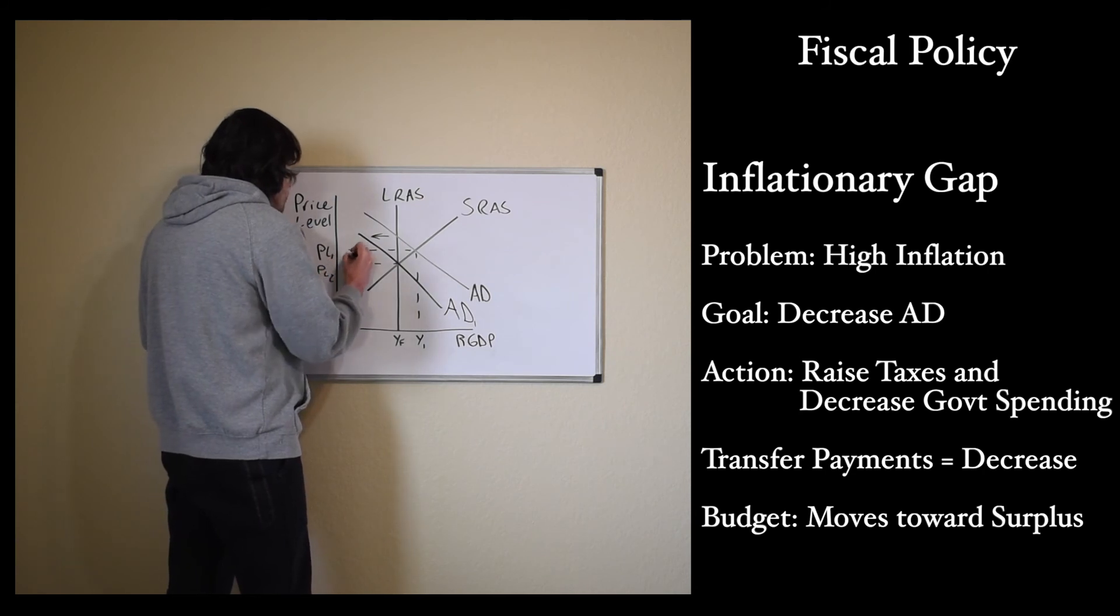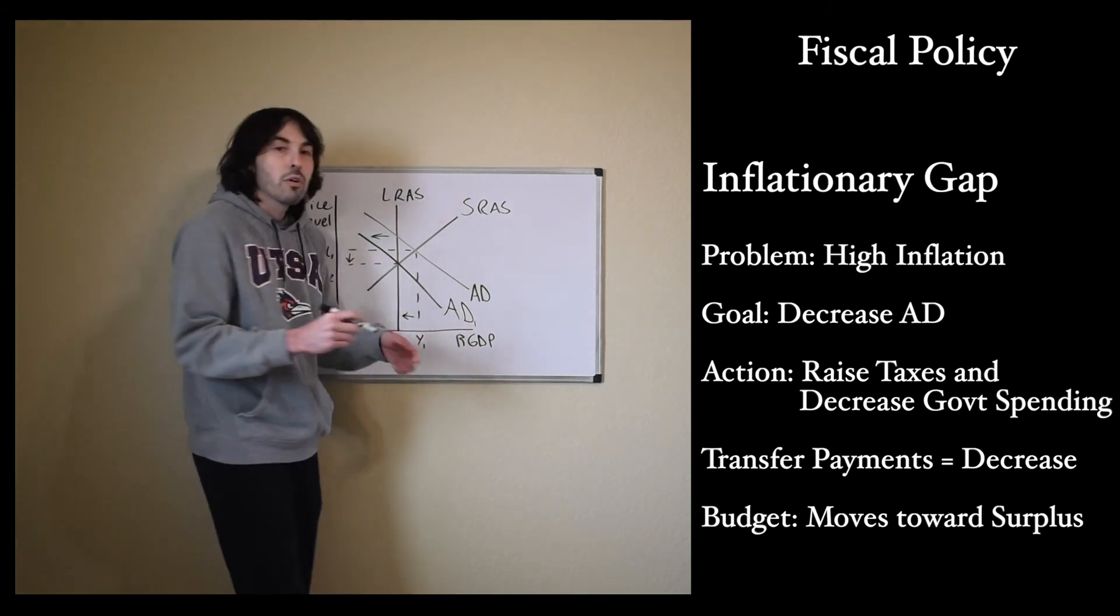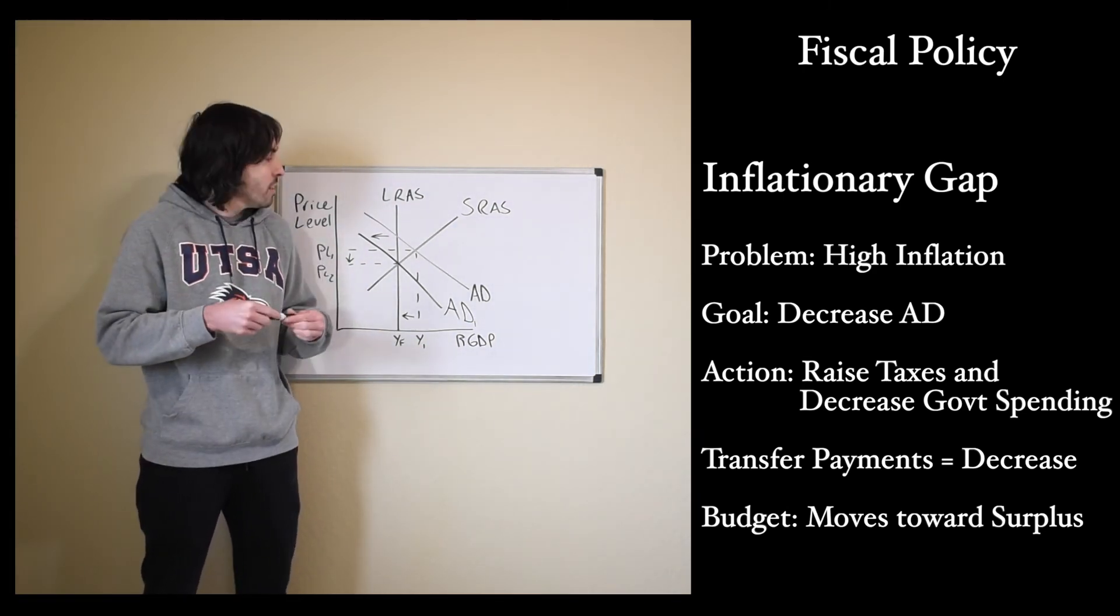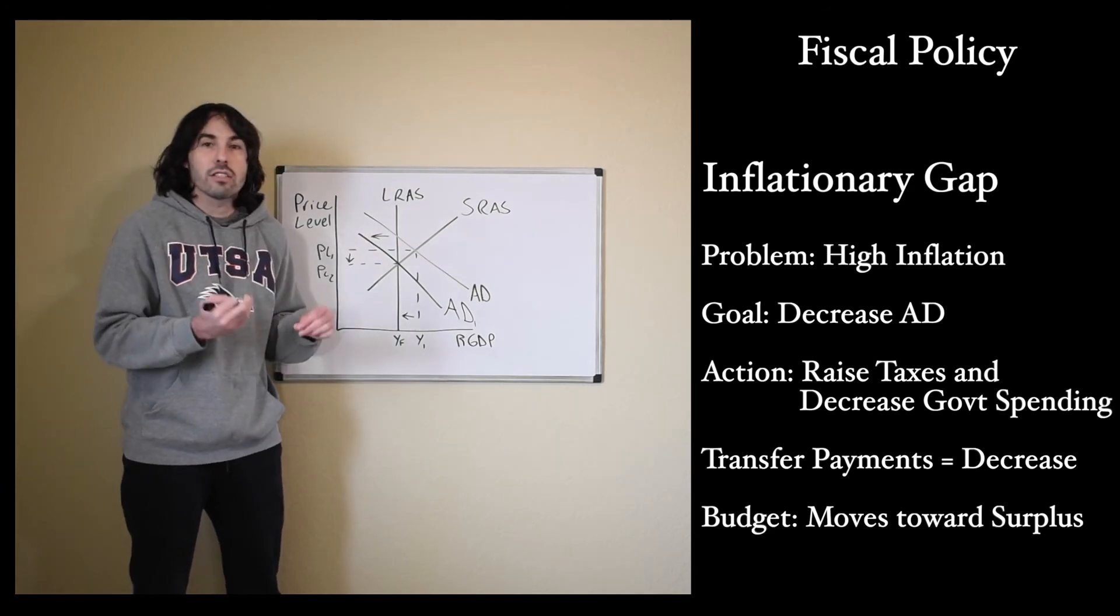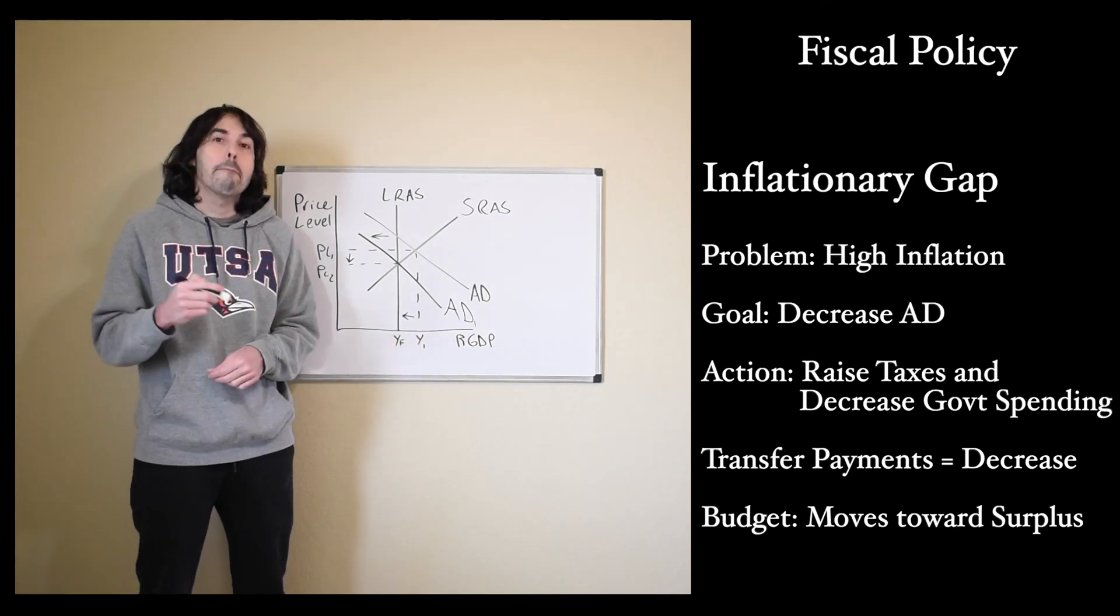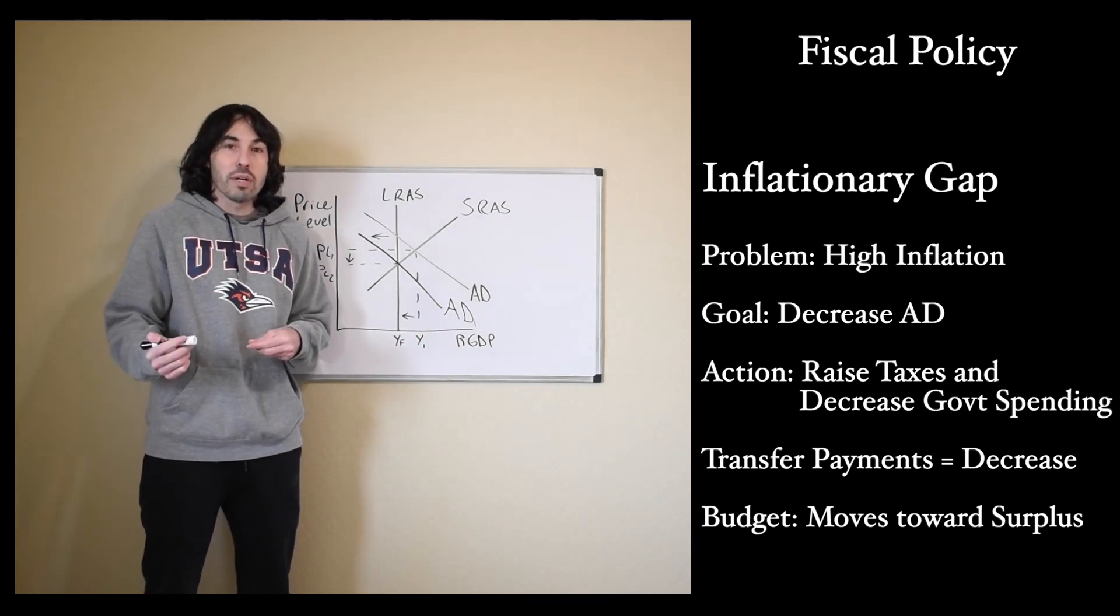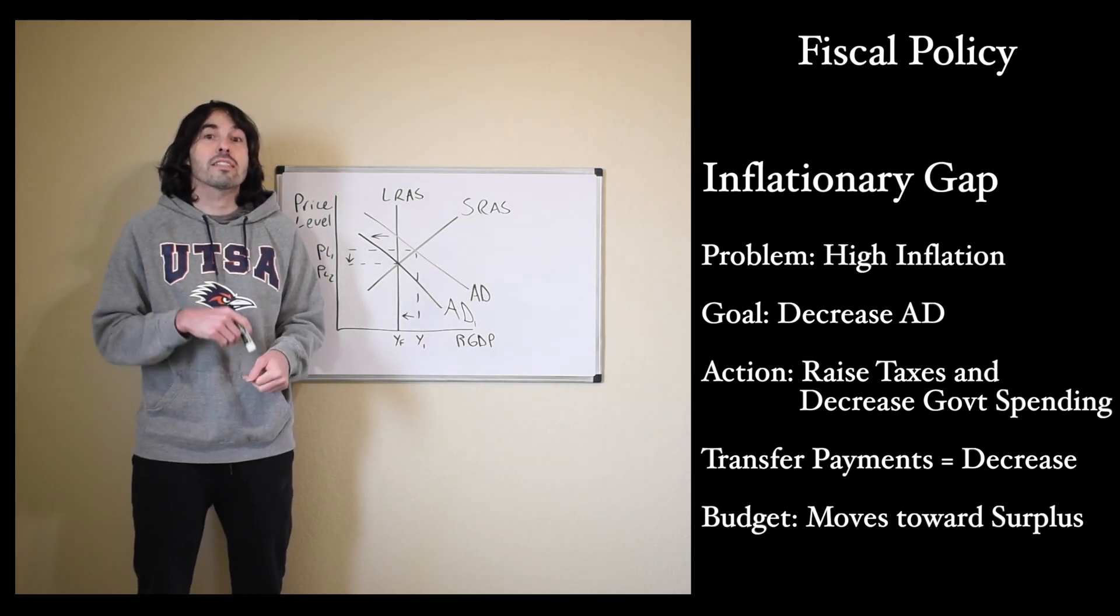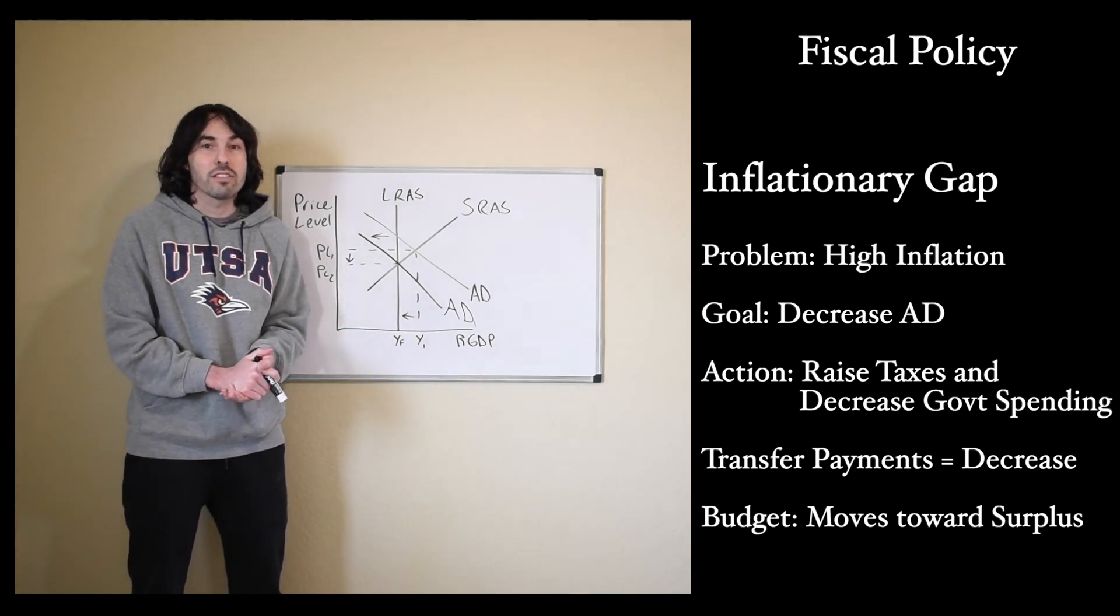Our price level will decrease. That's exactly what we wanted. Our real GDP will slow down. The economy was overheating. We needed to slow down so that prices didn't spiral out of control. Our price level has decreased, so we fixed what we were worried about. The unemployment rate did go up, but it went back to the natural rate of unemployment. As far as budget goes, taxes are high, spending is low, so we have a budget surplus. That's going to allow the government to maybe pay off their old debt if they wanted to do that.